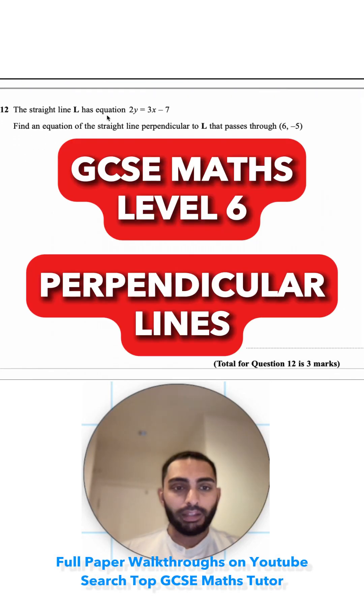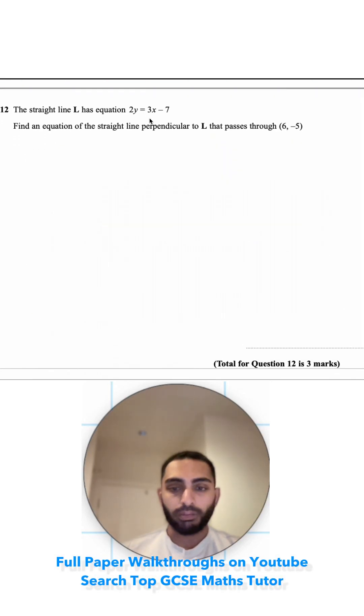Question 12. The straight line L has equation 2y equals 3x minus 7. Find an equation of the straight line perpendicular to L that passes through (6, -5).